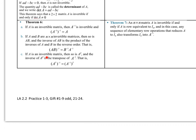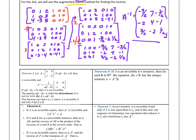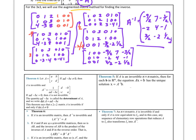If A is invertible, so is its transpose, and the inverse of A transpose is the transpose of A inverse. Theorem 7: an n×n matrix A is invertible if and only if A is row equivalent to the identity matrix. Any sequence of elementary row operations that reduces A to the identity also transforms the identity into A inverse — which is exactly what the augmented matrix method does. That's everything for this section on ways to find the inverse.